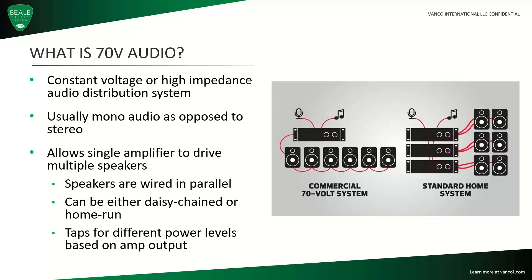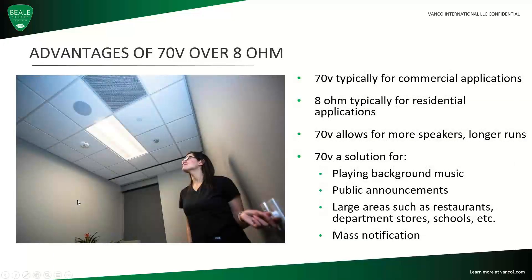Another nice difference is that the volume level or maximum volume level is controlled by the speaker and not the amplifier. We have taps on the speaker that allow that — we'll cover that in a bit. If you notice the diagram, you'll see the 70 volt system uses one wire run as opposed to multiple wire runs for a residential system. Some of the advantages of 70 volt over residential: more speakers, longer wire runs — we can go out over 1,000 feet on a 70 volt system, whereas a residential system is typically limited to 100 or 150 feet. More speakers, longer runs, fewer amplifiers.